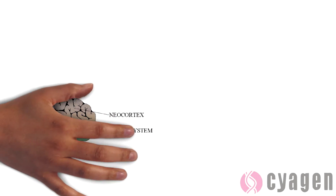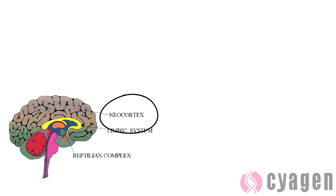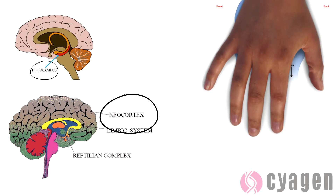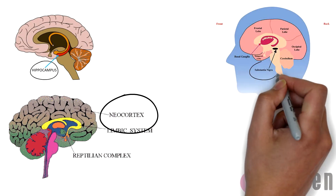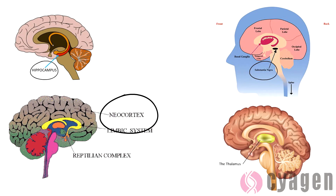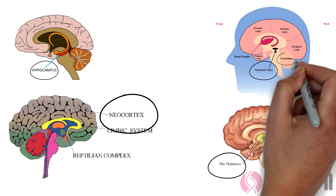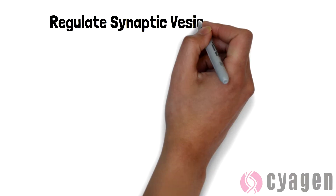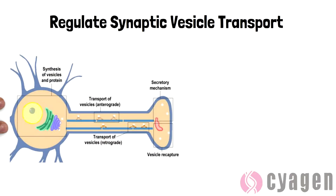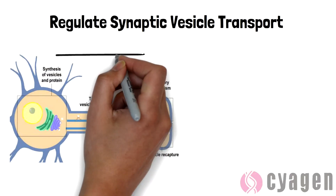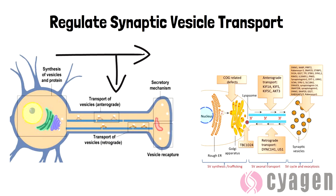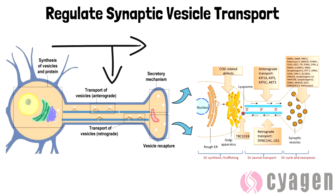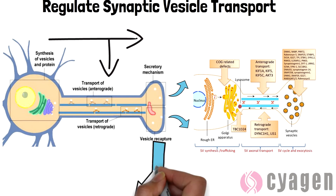Alpha-synuclein is predominantly expressed in the neocortex, hippocampus, substantia nigra, thalamus, and cerebellum. Its specific function is to regulate synaptic vesicle transport and control the release of neurotransmitters into vesicles.